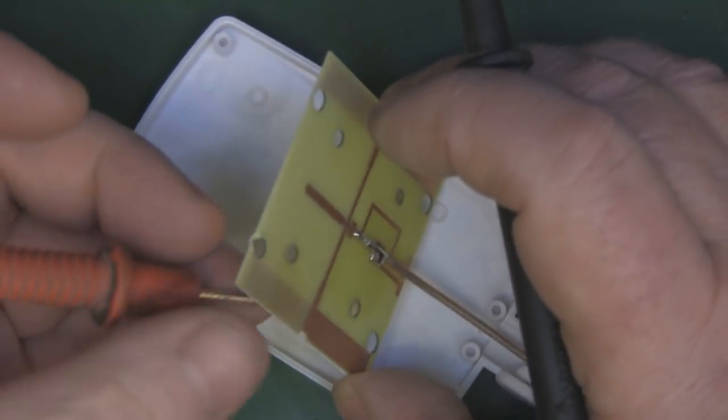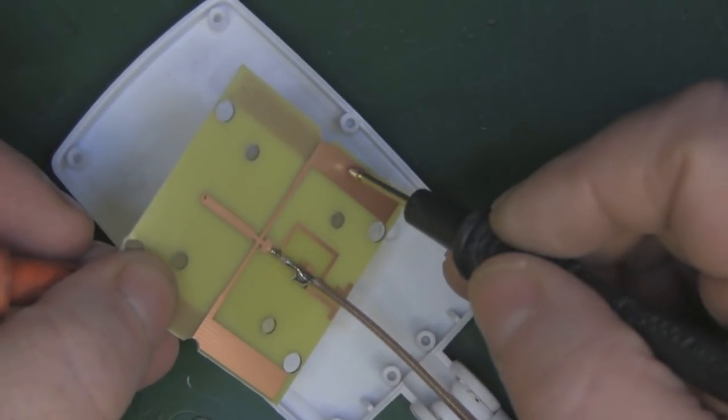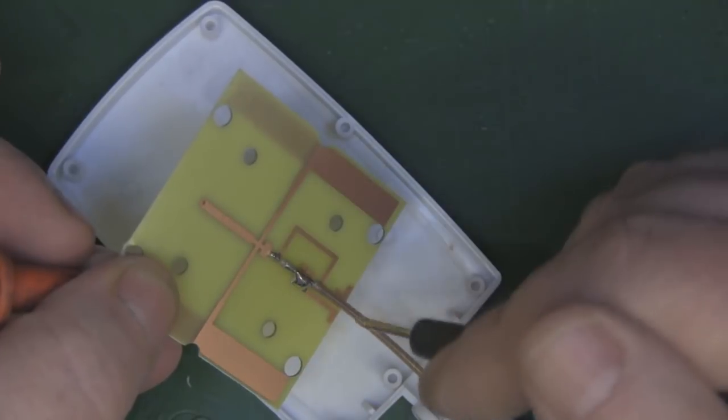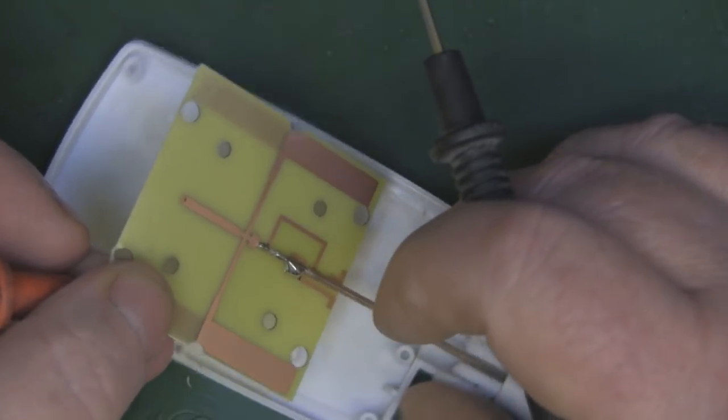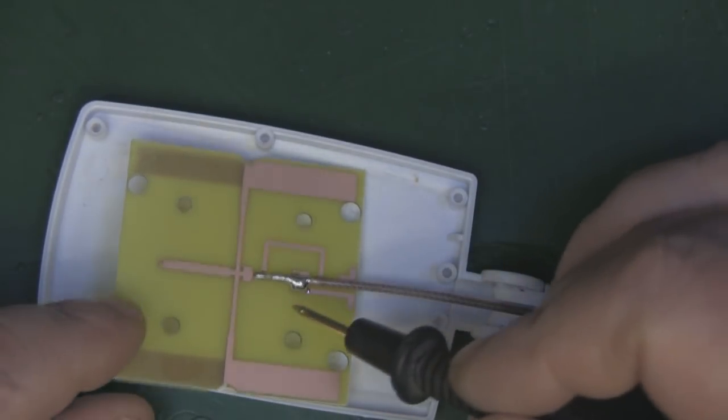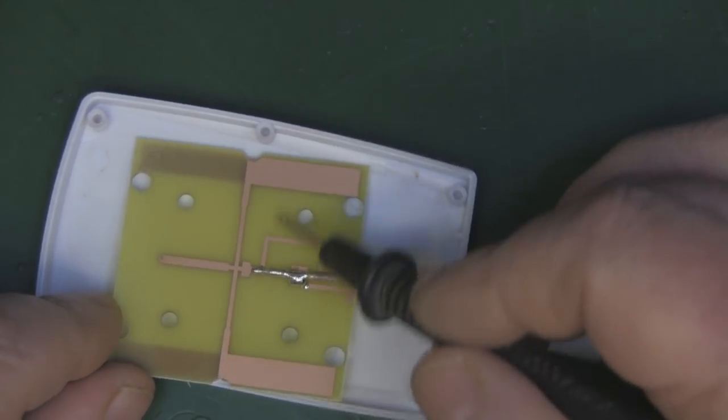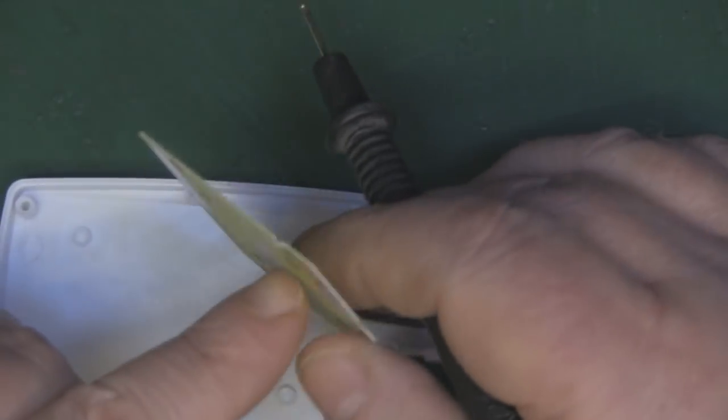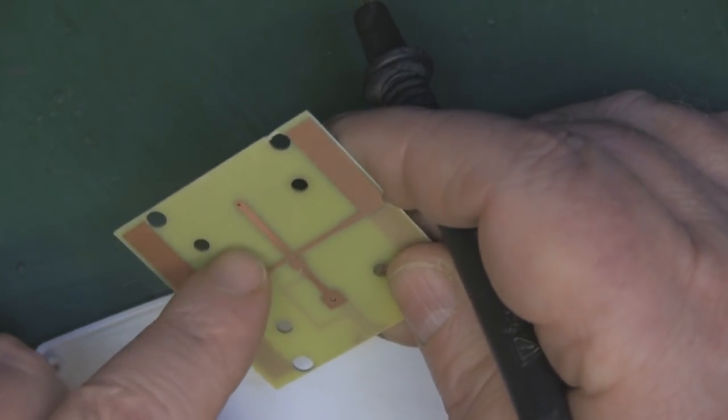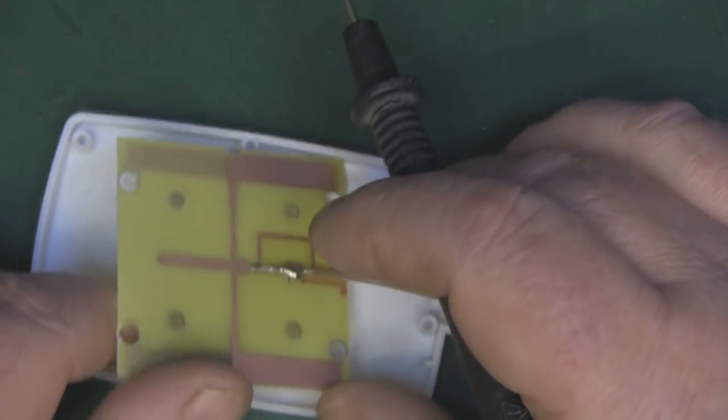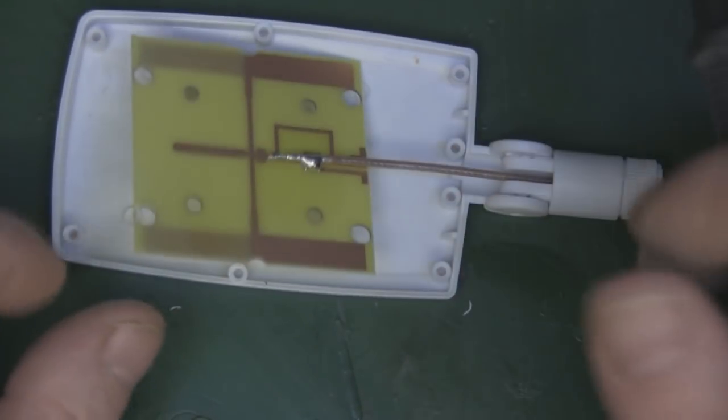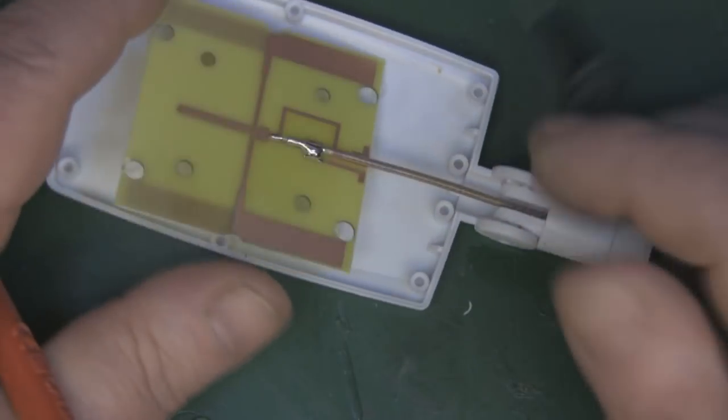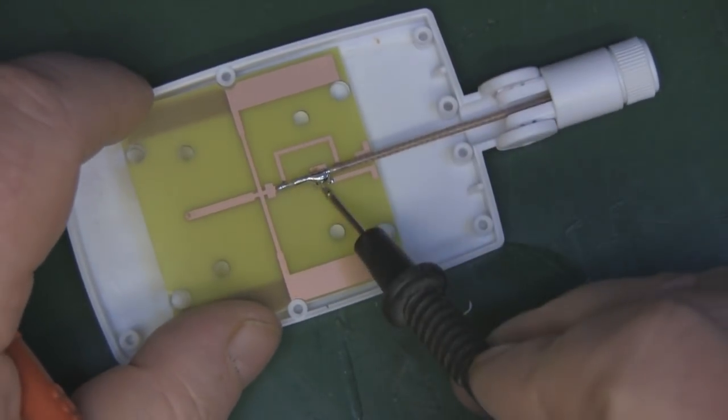I'm just checking continuity and it seems that both sides of the element are connected to each other. If memory serves, one of these should be ground, so this side should be just ground and the opposite side the main driven element. I don't think they're supposed to be connected like that, but I may well be wrong.